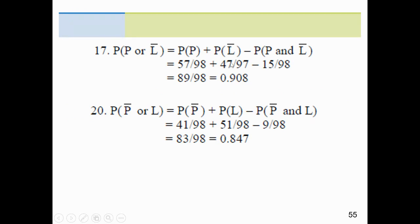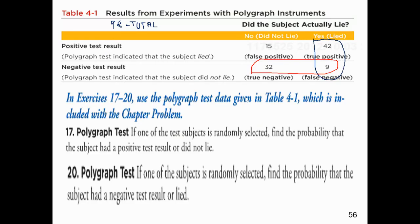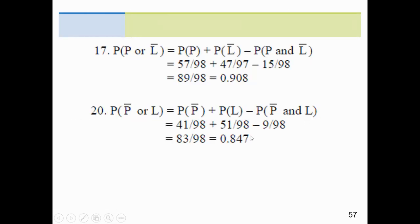Problem 20: find the probability that a subject had a negative test result or lied. There are 41 people with a negative result and 51 people who lied, but 9 of those people had negative results and also lied. We don't want to count them more than once. So either add 41 + 51 and subtract 9, or instead of using 51 for 'lied,' just use 42, not counting the 9 from the start. The formal method: P(negative or lied) = 41/98 + 51/98 - 9/98.